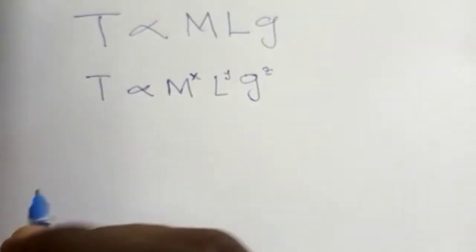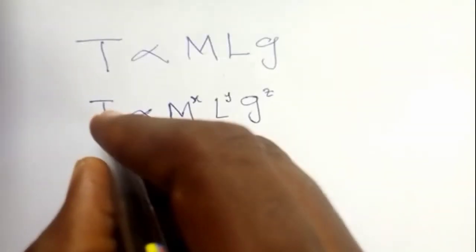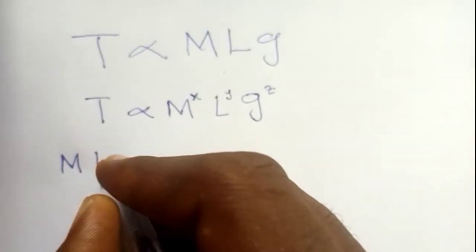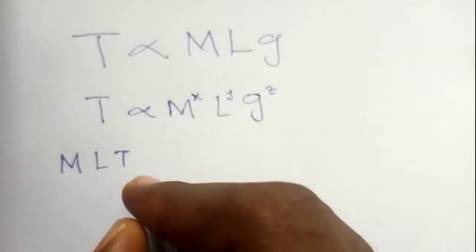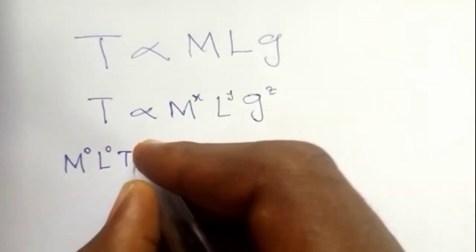The next step is present these quantities in their dimension form. Looking at the left hand side, we only have T, so it means M will be raised to power 0, L will be raised to power 0, T will be raised to power 1 because T is the only one represented here. L is not represented, M is not represented.